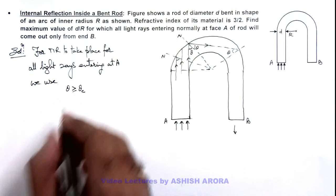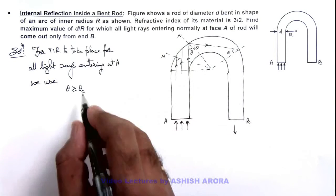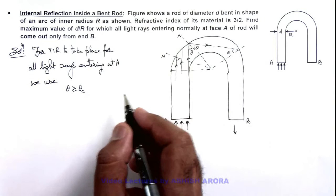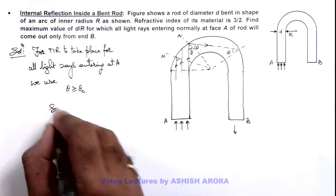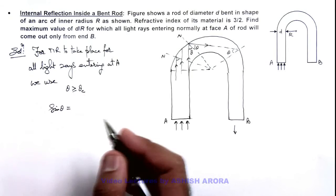Here we know that critical angle can be written as sine inverse 1 by mu. So here we can write the value of sine theta should be equal to, we are using equality as a limiting case.